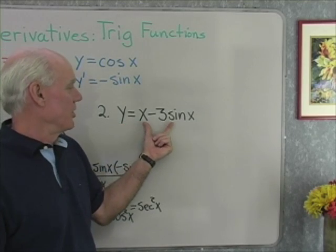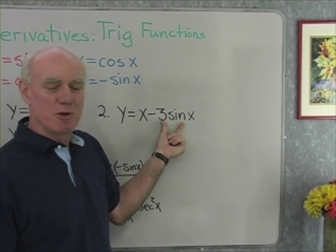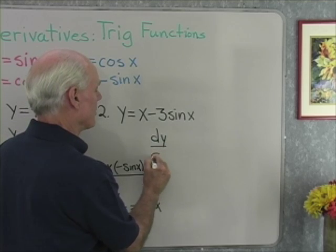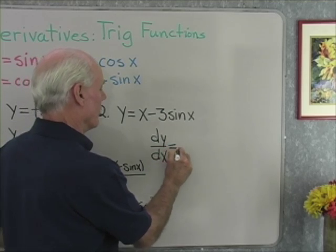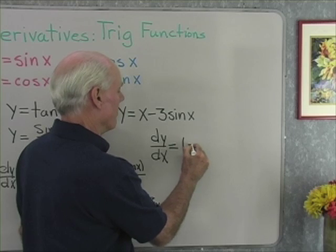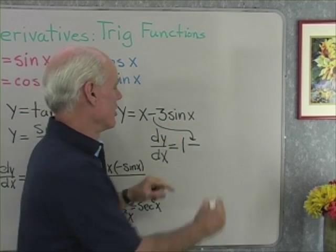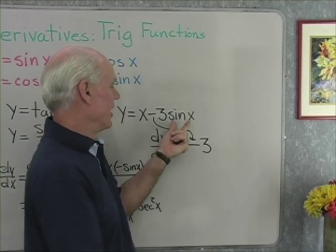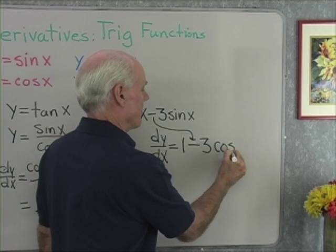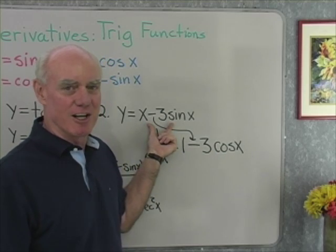So we have y equals x minus 3 sine x — an algebraic function minus a trigonometric function — so we'll just differentiate left to right. The derivative of y with respect to x: first I'll differentiate x with respect to x, the result is 1, minus 3 times the derivative of sine x, and the derivative of sine x is cosine x. So the derivative is 1 minus 3 cosine x.